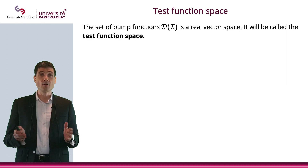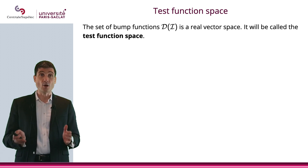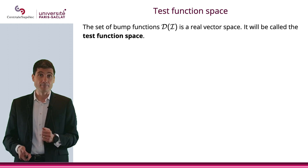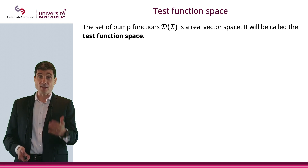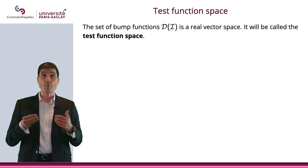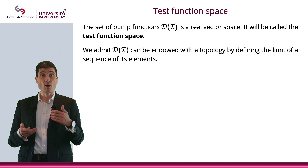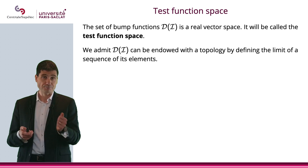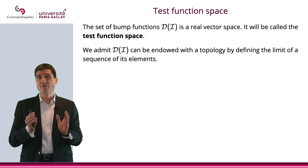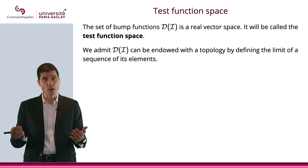Now let me define the test function space. It is simply the set of bump functions, basically the set D that I just defined. This is a vector space, and I would like to equip this vector space with a topology. I'm going to do this by defining how sequences of D converge. That's a little tricky because it's not obvious that by defining the way sequences converge, I can define the topology.